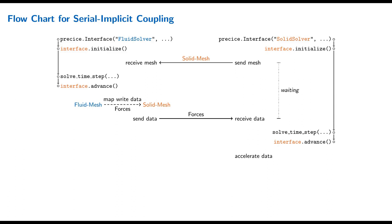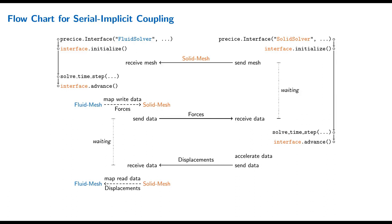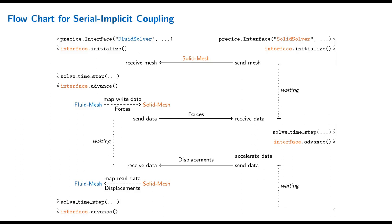We really see the serial coupling scheme: the fluid time step runs, then the solid solver computes its time step while the fluid solver waits. The solid solver calls advance, where we check for convergence. Assuming we're not converged yet, we accelerate the data — for serial implicit coupling this happens on the second participant (the solid solver) — then send displacements from solid to fluid. The fluid solver is done waiting, computes a read-data mapping of displacements from the solid mesh to the fluid mesh, and then computes the next coupling iteration.